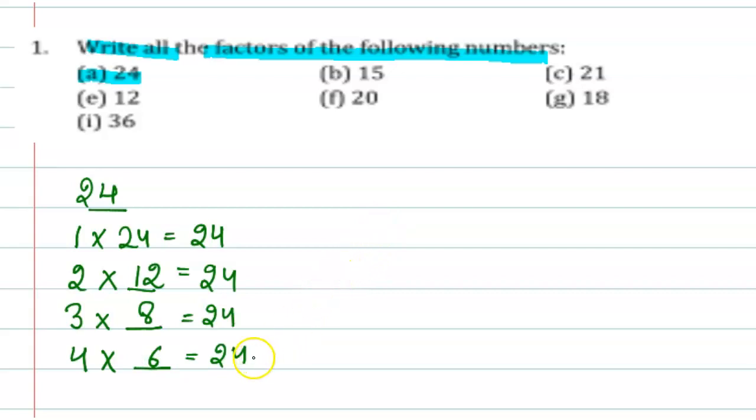Now 5, 5 is not divisible by 24, so 5 is not a factor of this. And 6, 6 into 4 is equal to 24.